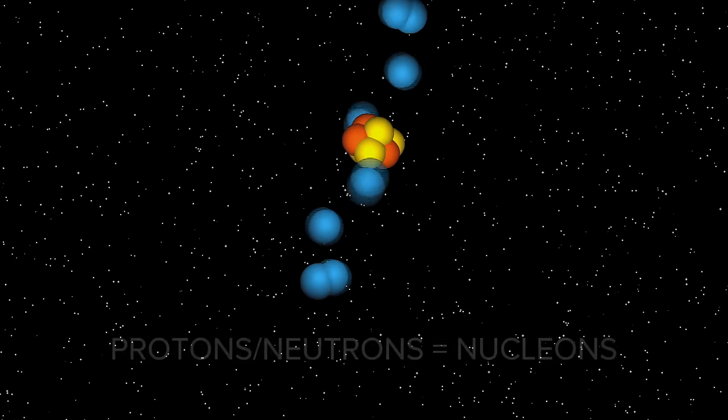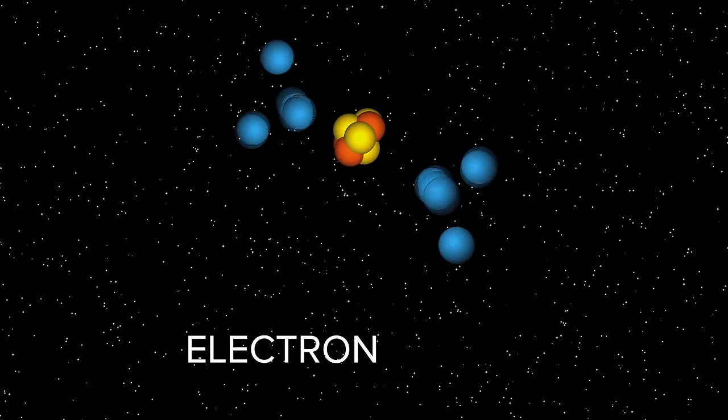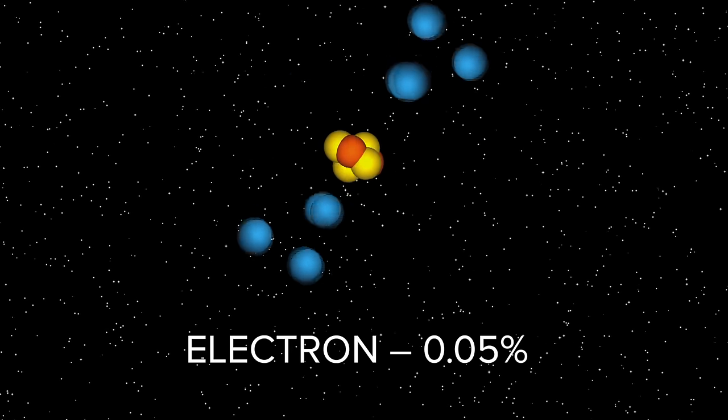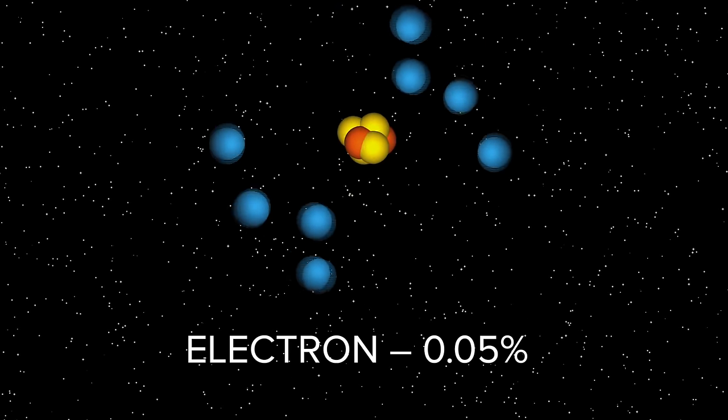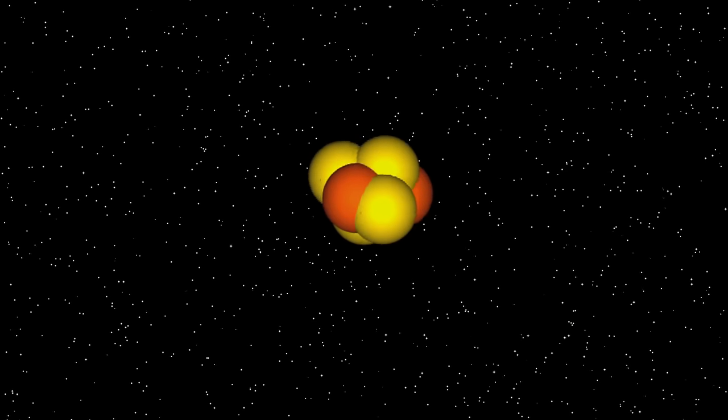In contrast, the electrons are relatively light. Each electron has only about 0.05 percent of the mass of the nucleons. So in our search for the origins of mass, we can ignore the electrons. To all intents and purposes, they don't matter.